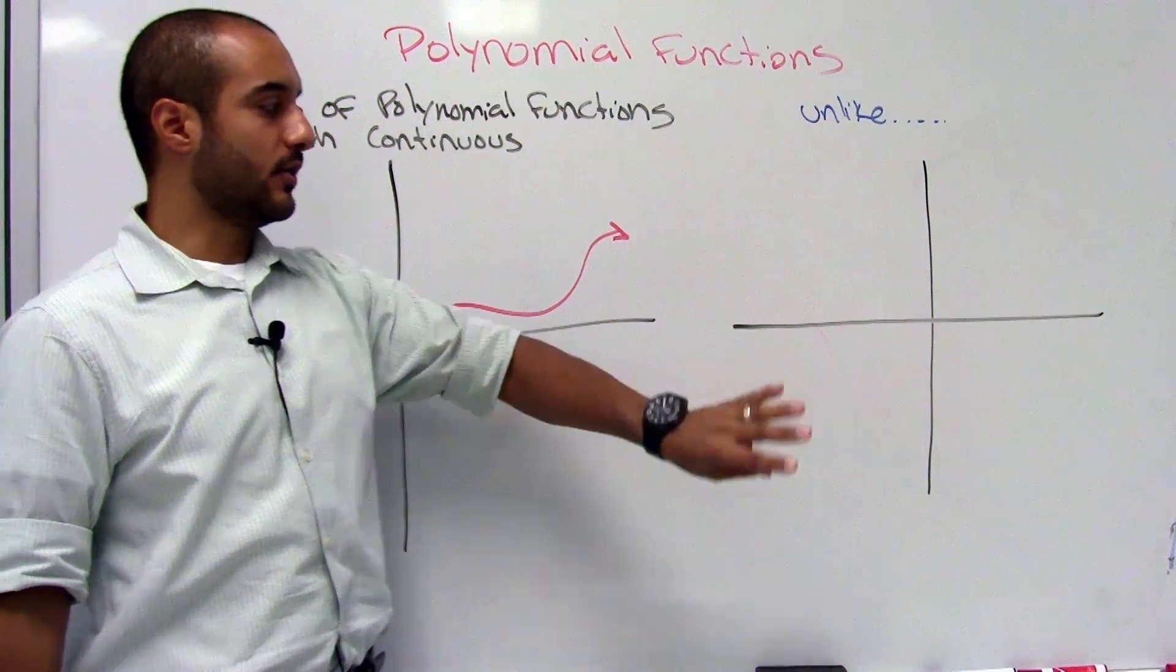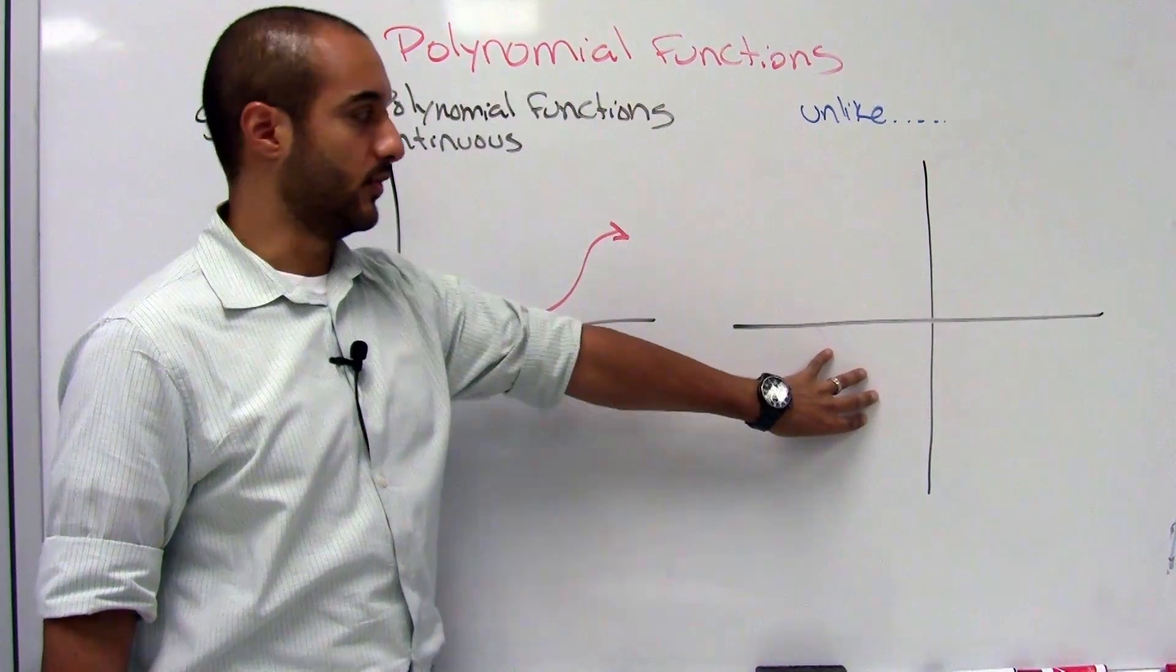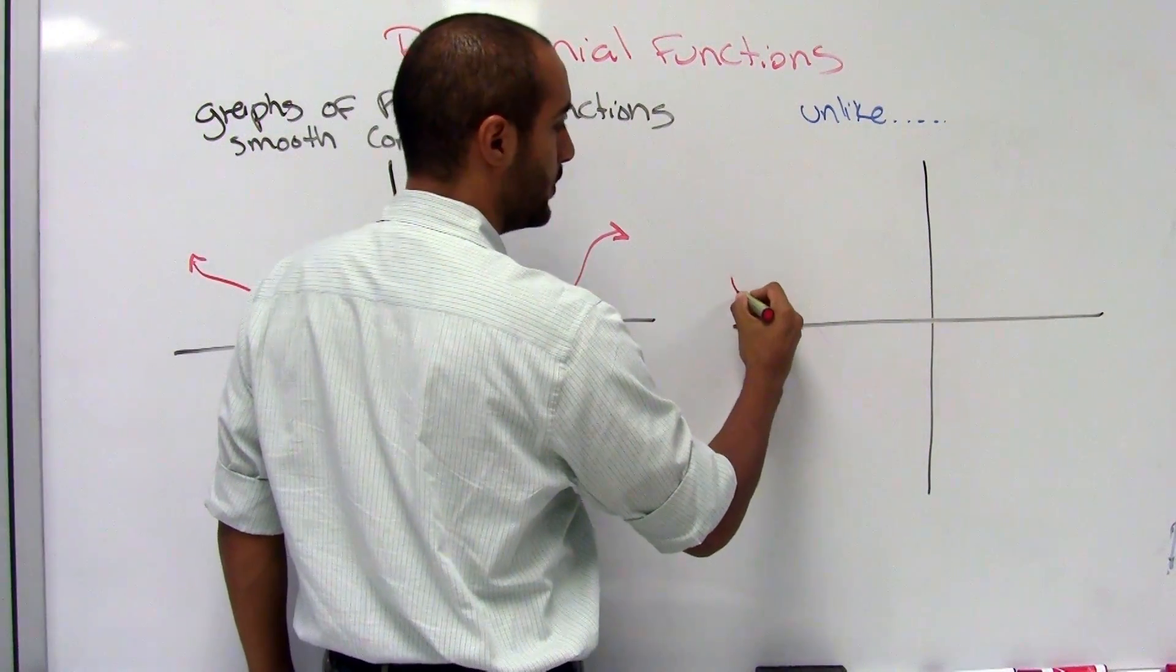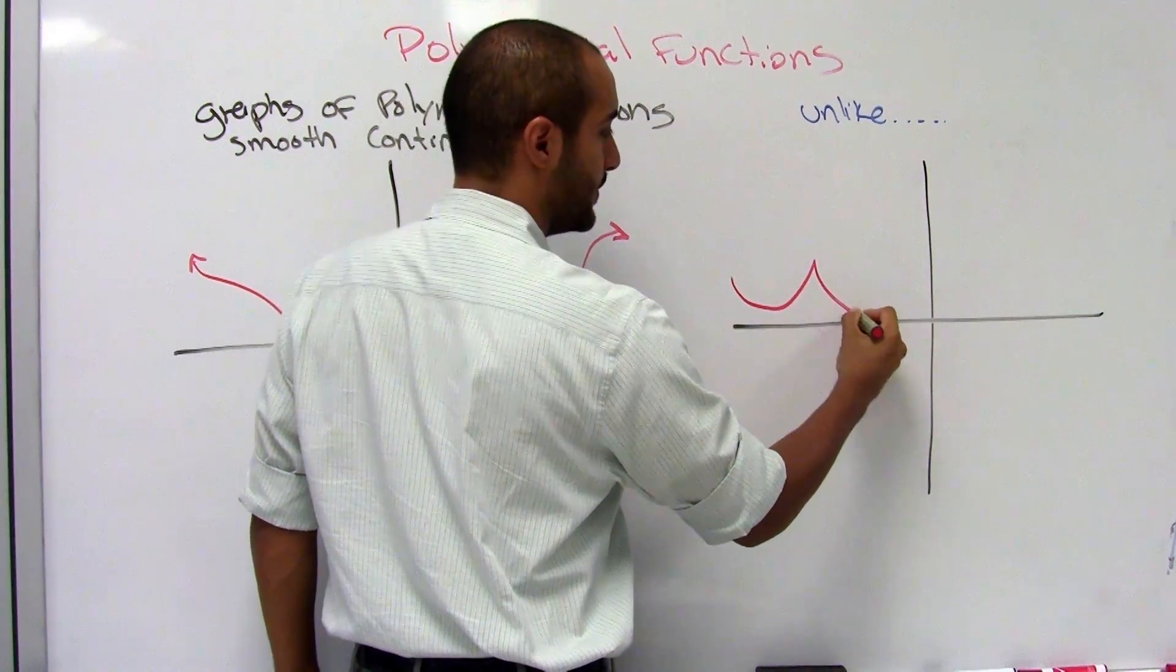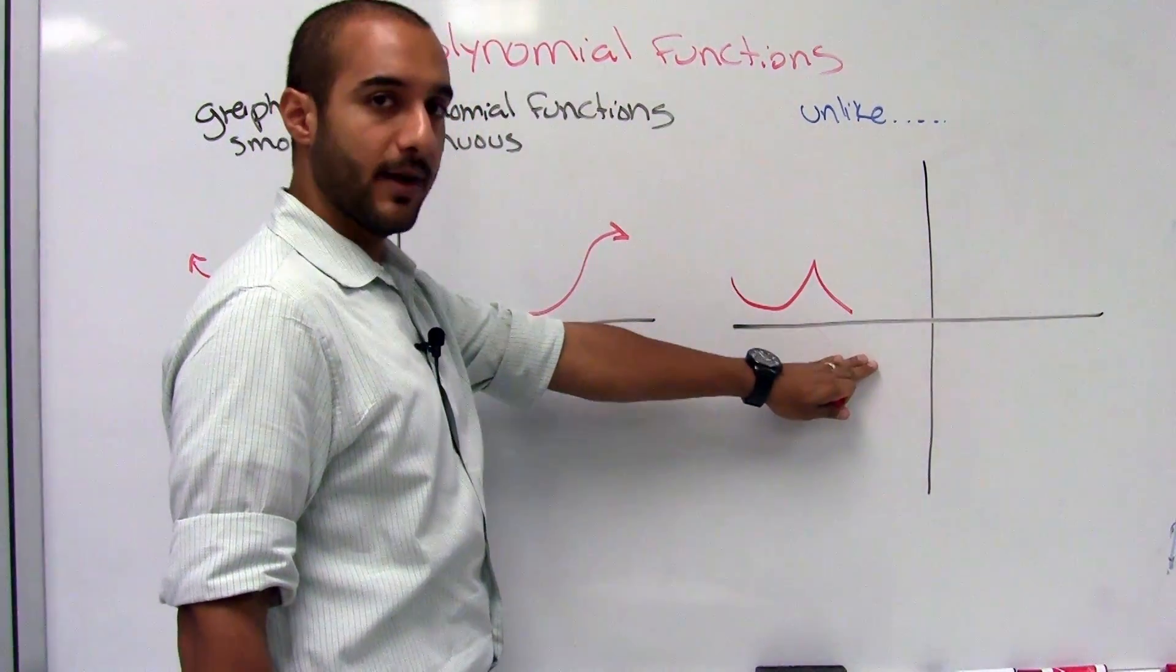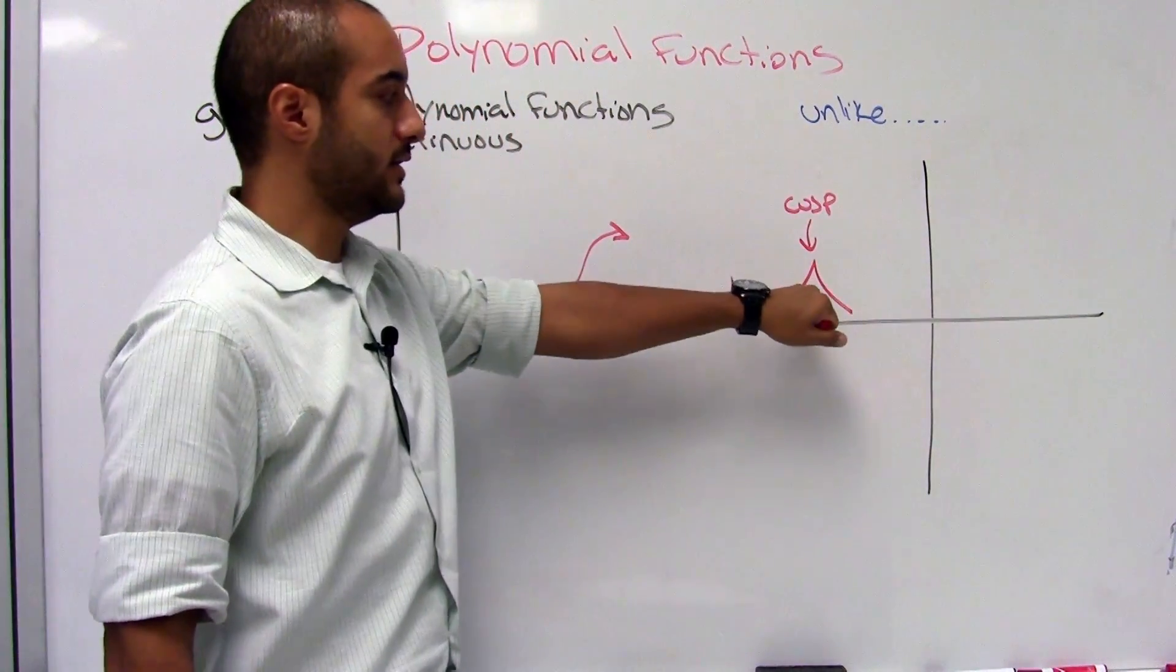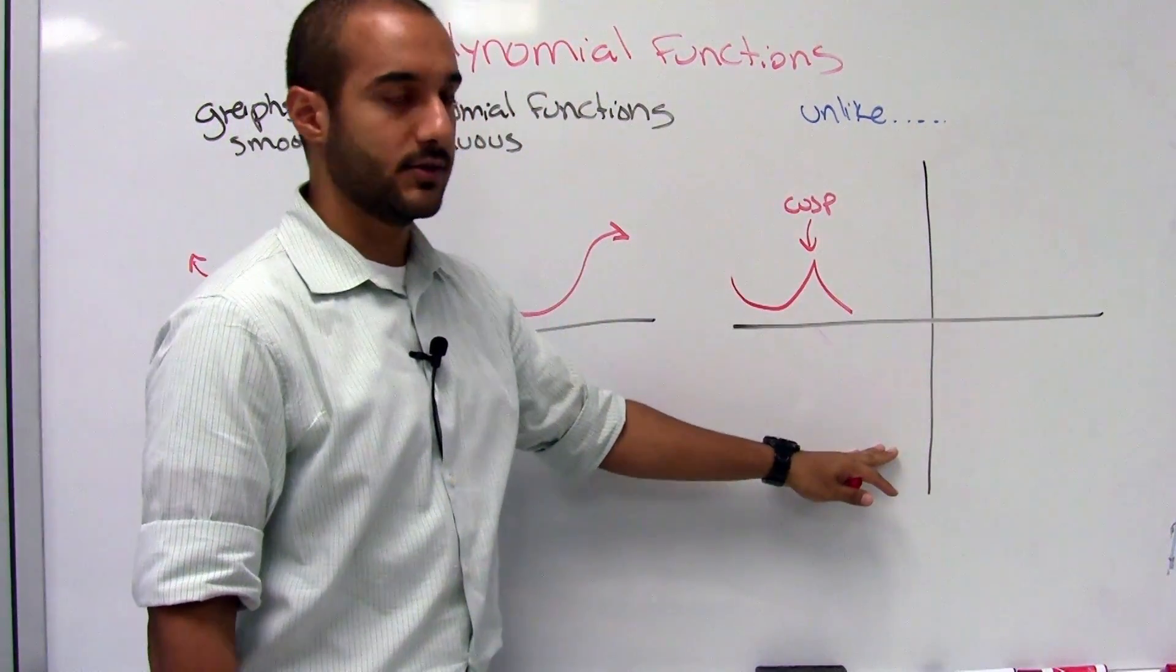But what does it look like when it's not from a polynomial function? We can have something that might come down and very sharply turn back down. This is called a cusp. So as soon as you see a cusp, this is not a polynomial function.